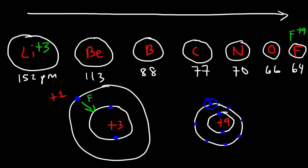Fluorine's valence electron feels an effective nuclear charge of +7 — nine minus the two core electrons. As a result, the force the nucleus exerts on that electron is much stronger, pulling the electrons closer toward the nucleus and making the atom smaller. So as you go from left to right, the effective nuclear charge increases, there's less shielding, and the atoms become smaller.